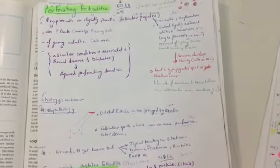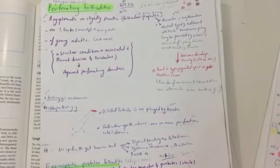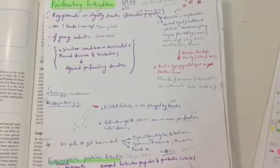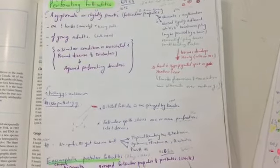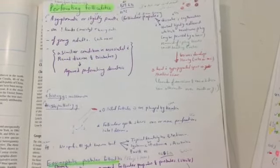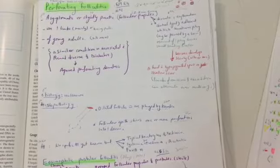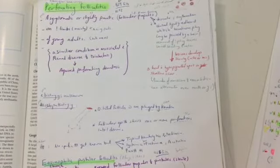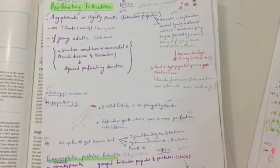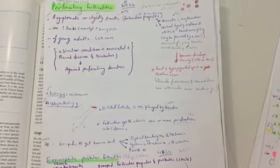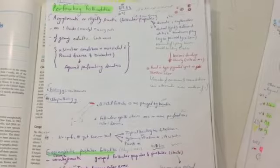There is mainly on the limbs, especially hairy parts, and of young adults of both sexes. A similar condition is associated with renal disease and diabetes, it's called acquired perforating dermatosis. Etiology is unknown. Histopathology: dilated follicle which are plugged by keratin. Follicular epithelium shows one or more perforations into the dermis. Treatment: no specific treatment yet, but topical keratolytics and tretinoin, systemic isotretinoin and PUVA. This is the perforating folliculitis.